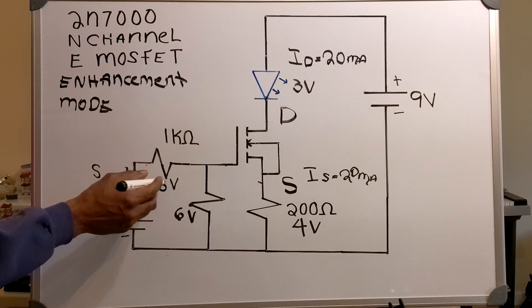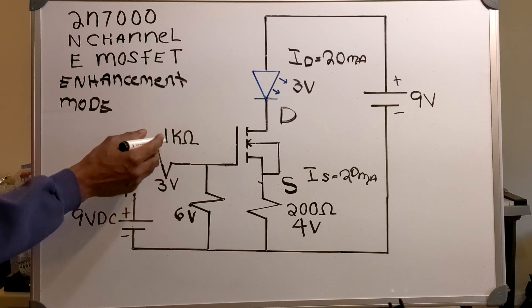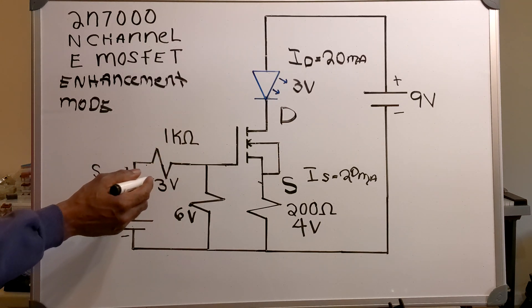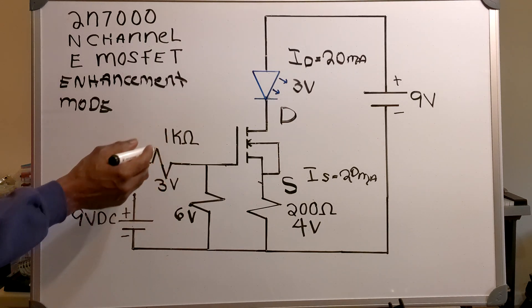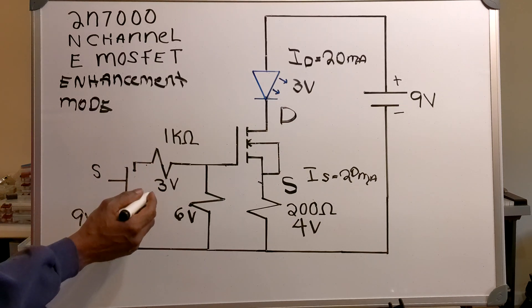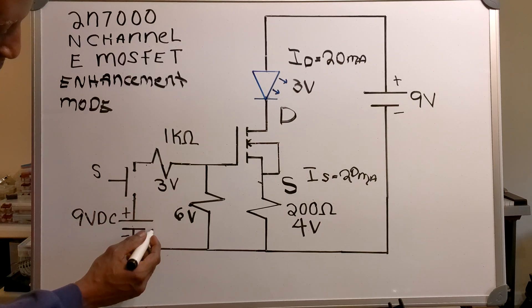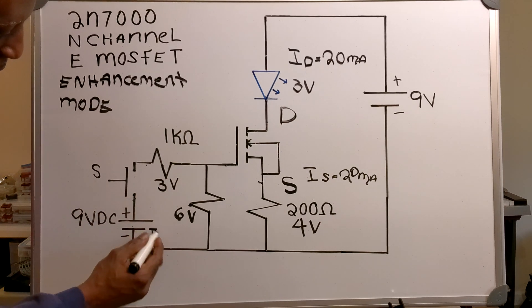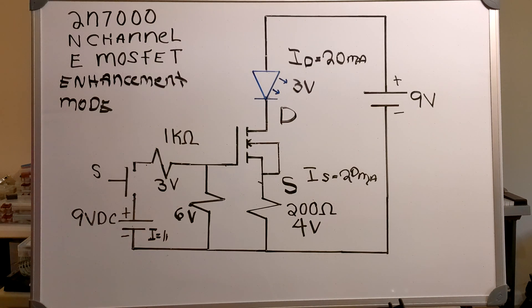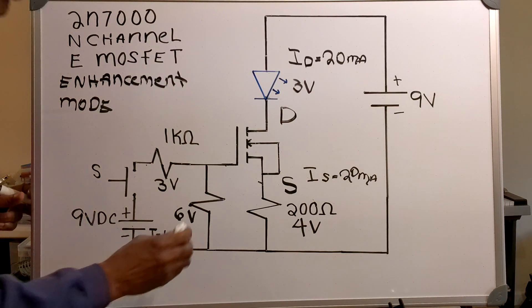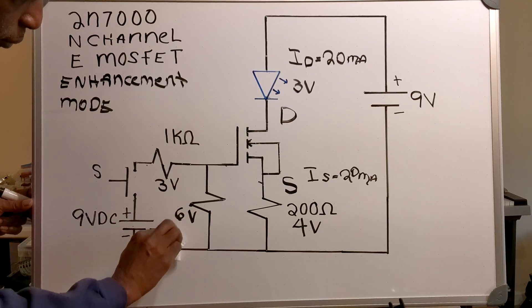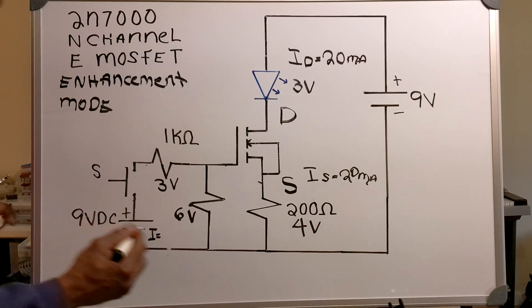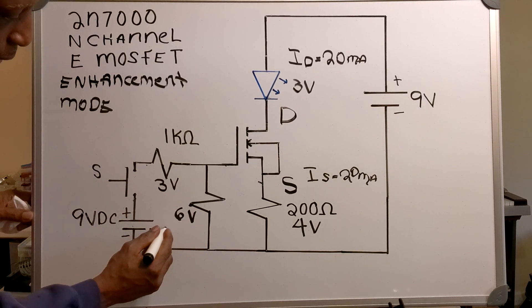So, the current that will be going through my 1K ohm resistor will be 3 volts divided by 1K ohm, and that will give you a current of 1 milliamp. But that's wrong. A current of 3 milliamps.